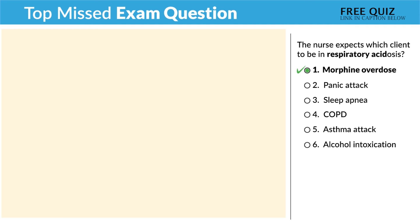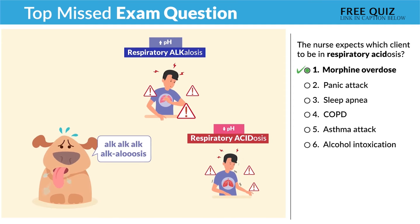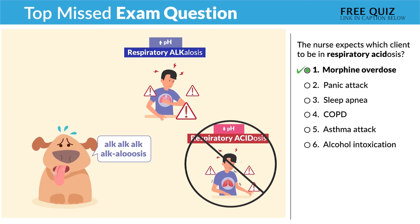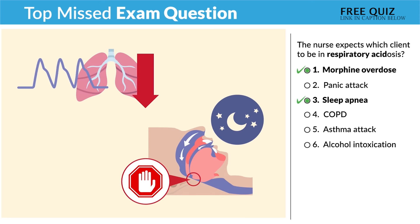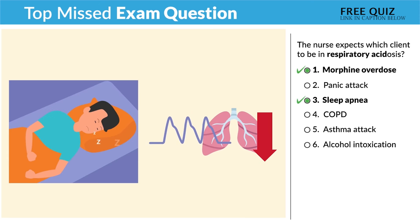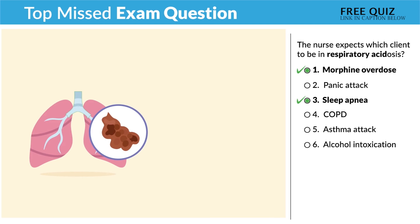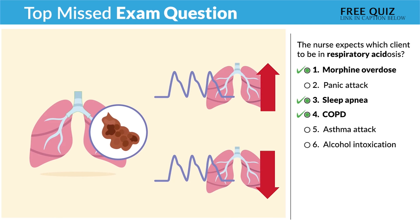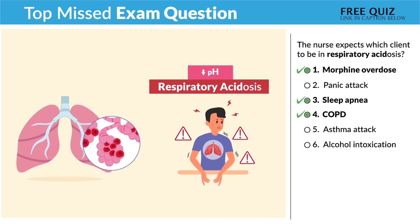Option two is incorrect: a panic attack. We have fast, rapid breathing — more alkalosis, not acidosis. Option three is correct: sleep apnea. We have slow acidosis — remember, like snoring. Acidosis. Option four is also correct and a bit tricky: COPD. We have decreased gas exchange from chronic obstruction, so CO2 is actually retained, putting us into acidosis. That's correct.